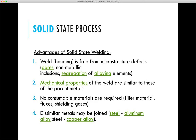Solid state welding also does not require any consumable materials, filler materials, or electrodes. Another advantage is that dissimilar materials — such as copper-iron, iron-titanium, titanium-aluminum, and magnesium-aluminum combinations — can be joined very conveniently.